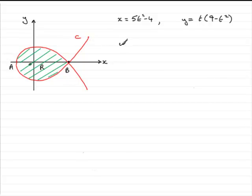So when y equals 0, we have that t times 9 minus t squared equals 0. So that means therefore this factor t equals 0, or the factor 9 minus t squared equals 0.